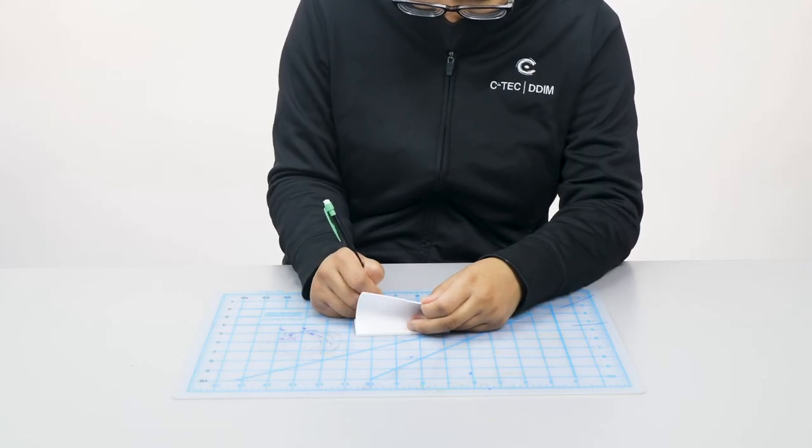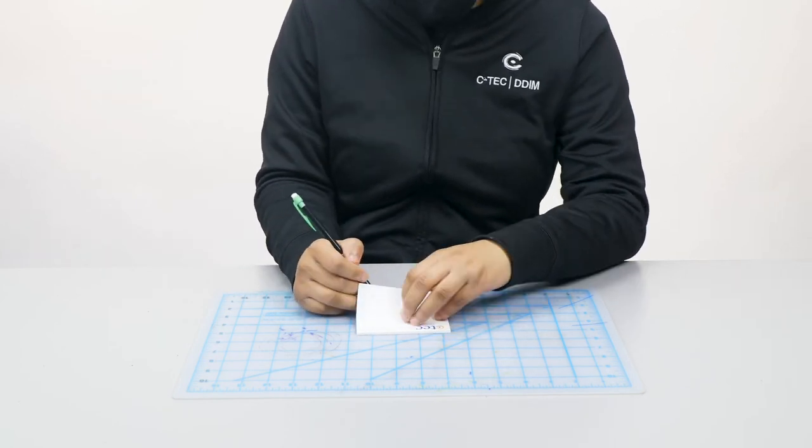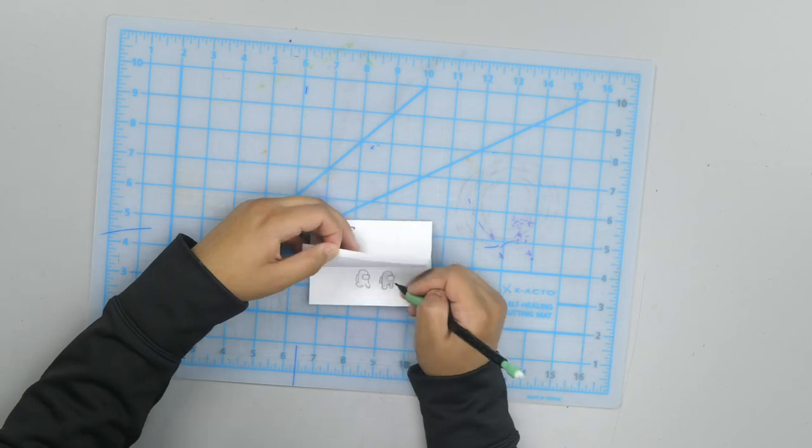Practice the basics of animation by channeling your inner first grader and creating a flipbook animation using the sticky notes. Draw a simple character interacting with something on the first page.